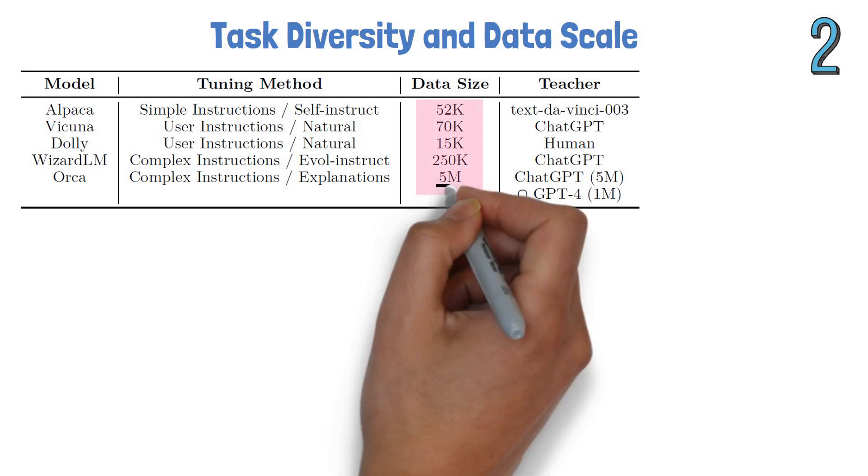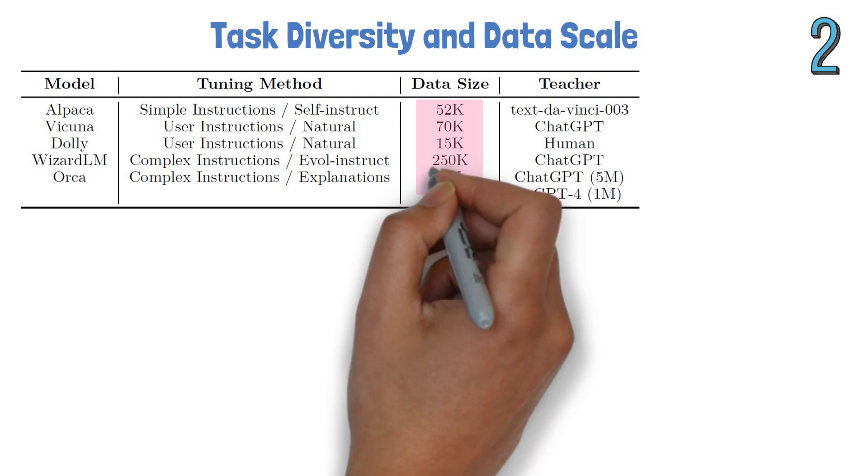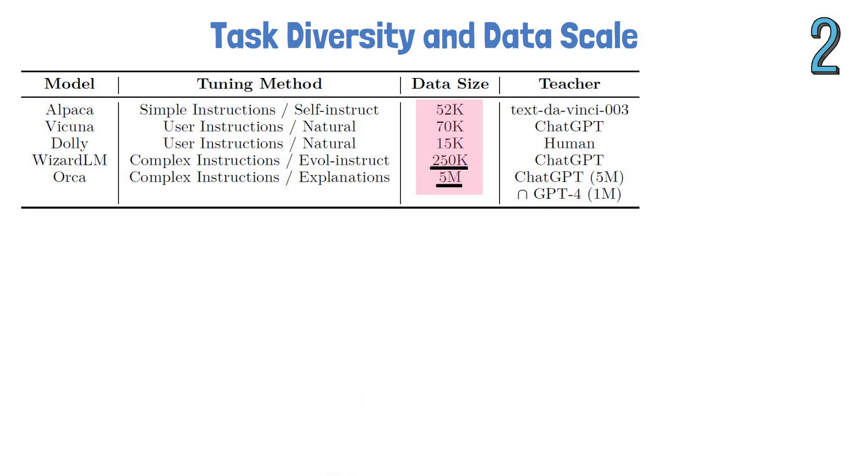which shows the order of magnitude increase in scale in ORCA, which is trained on 5 million samples, while the largest from the other models is WizardLM, which has 250k samples.